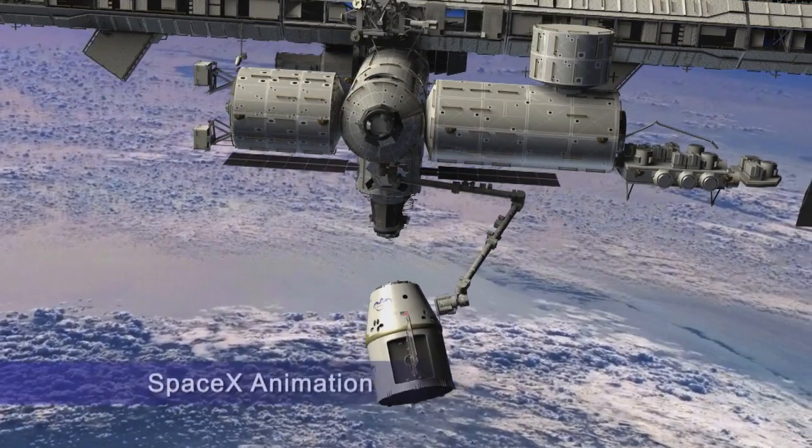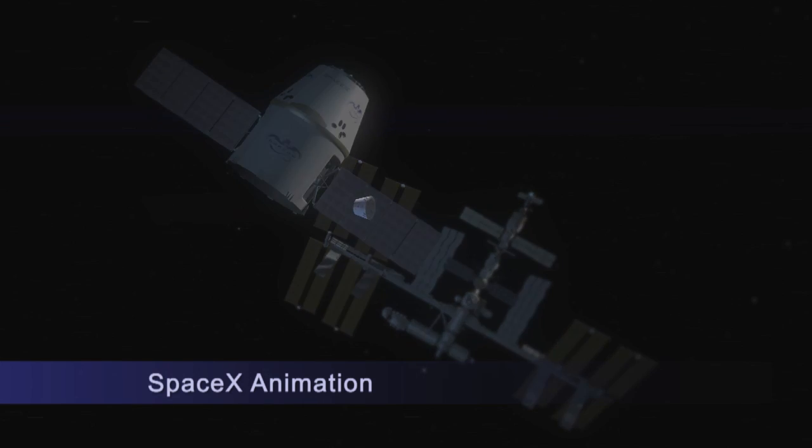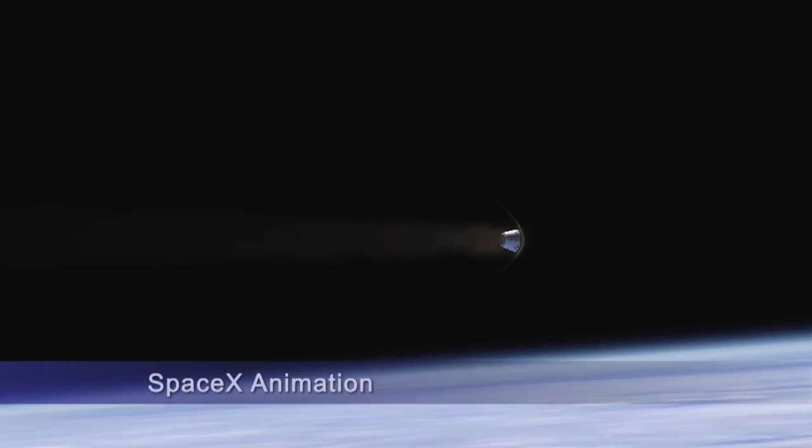When the SpaceX Dragon spacecraft returns to Earth after its mission to the International Space Station, it will depend on a heat shield material called PICA-X to protect it during reentry.